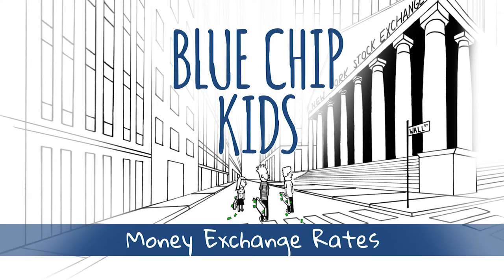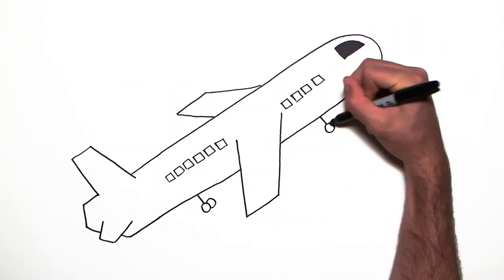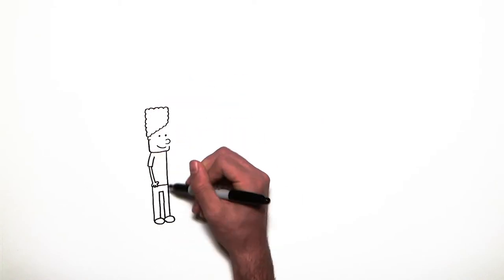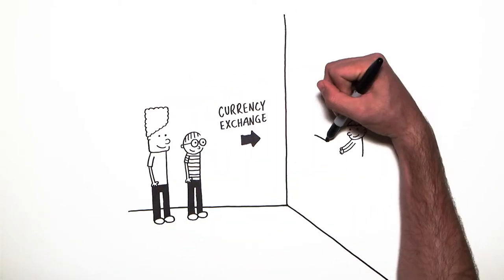Blue Chip Kids. If you travel to another country, one of your first stops will likely be a bank or a currency exchange office. It's where you can go to swap your country's money for another country's money.